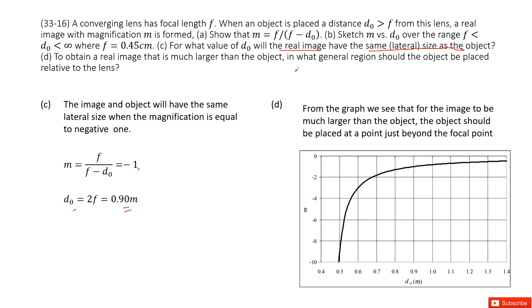If we want m to become very large, the real image is much larger. So that means the m should be a negative value and its absolute value should be very large, right?